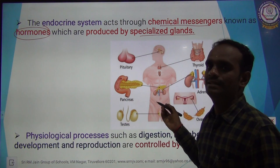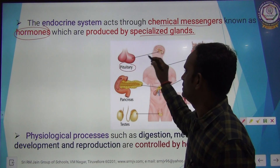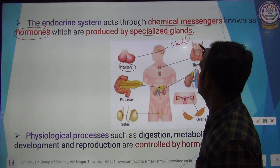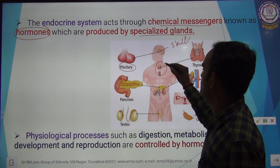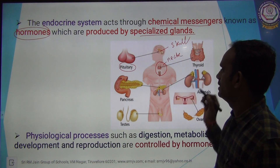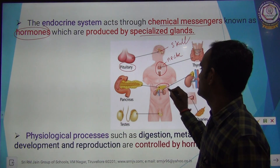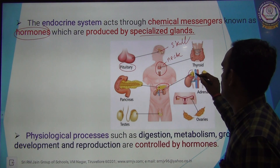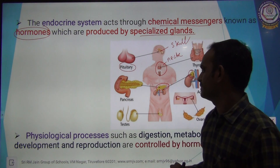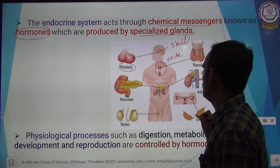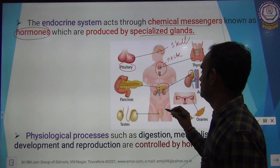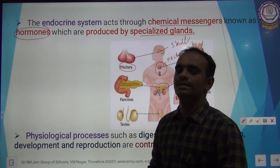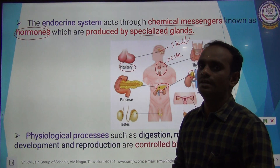There are so many glands in the body. The first one is the pituitary gland, present in the skull. The second one is the thyroid gland, present in the neck region. Then there is the pancreas, present in the abdomen. Then the adrenal gland, situated on the anterior part of the kidney. The next ones are the testis and ovaries, present in the pelvic region. Each gland synthesizes hormones. Hormones are the chemical messengers.